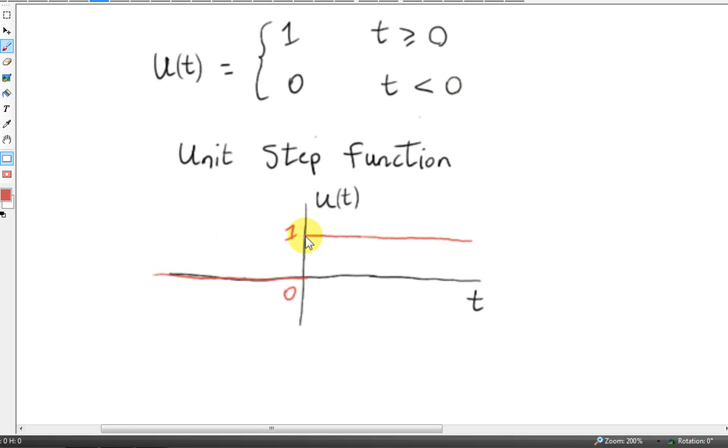So when t is zero, the value of the function is one. So really we could put a circle around here so that we can see that zero is excluded from this horizontal line.